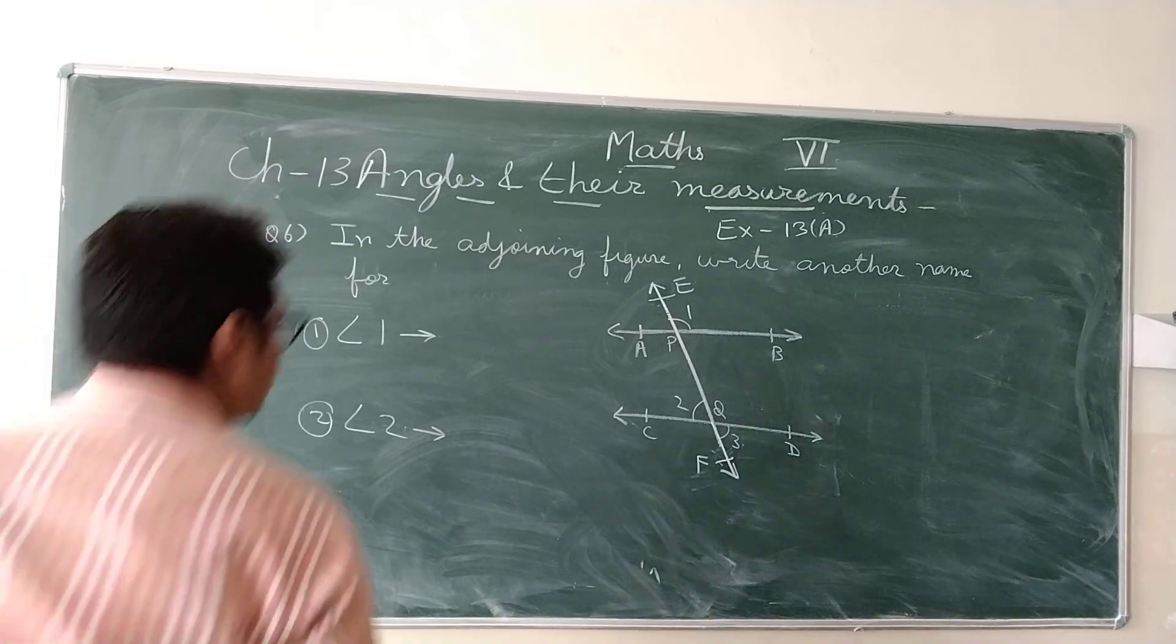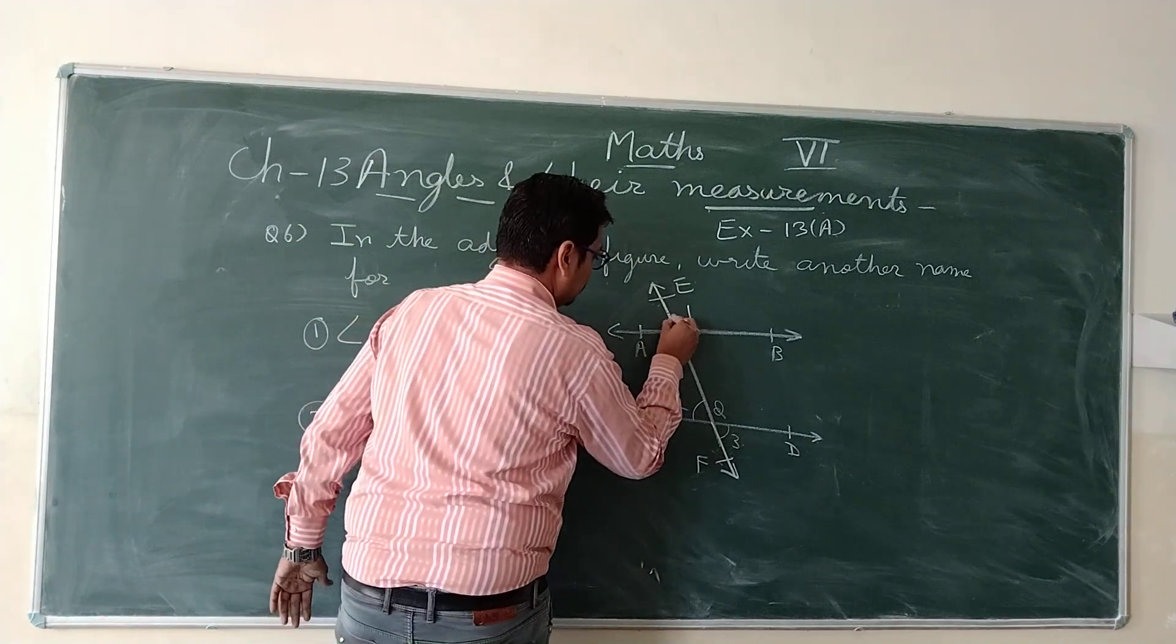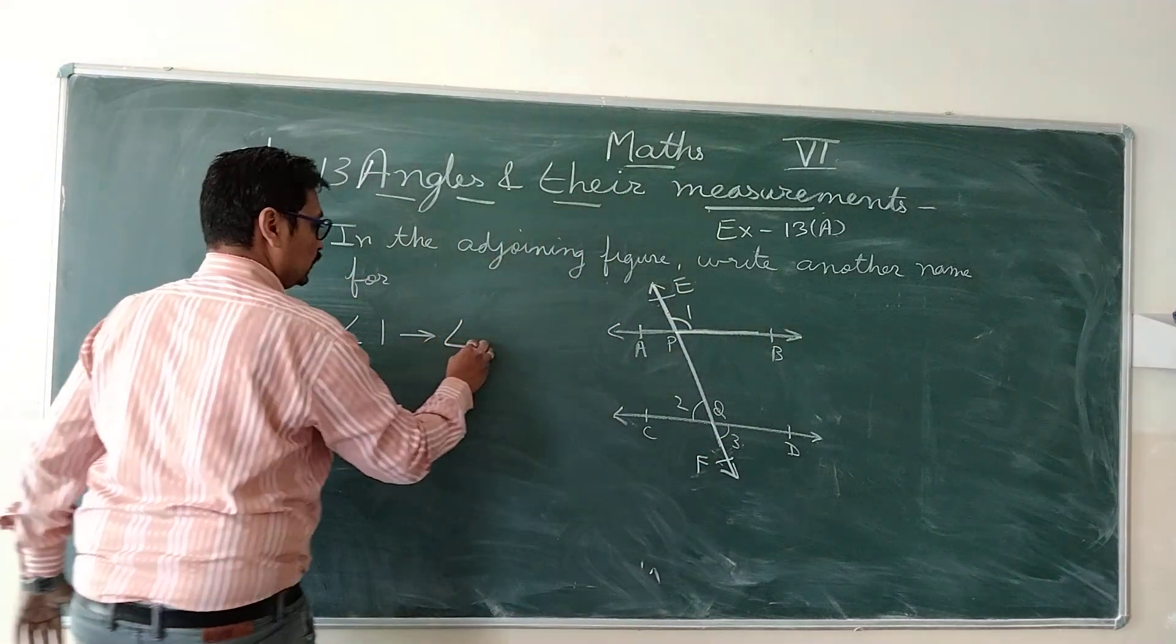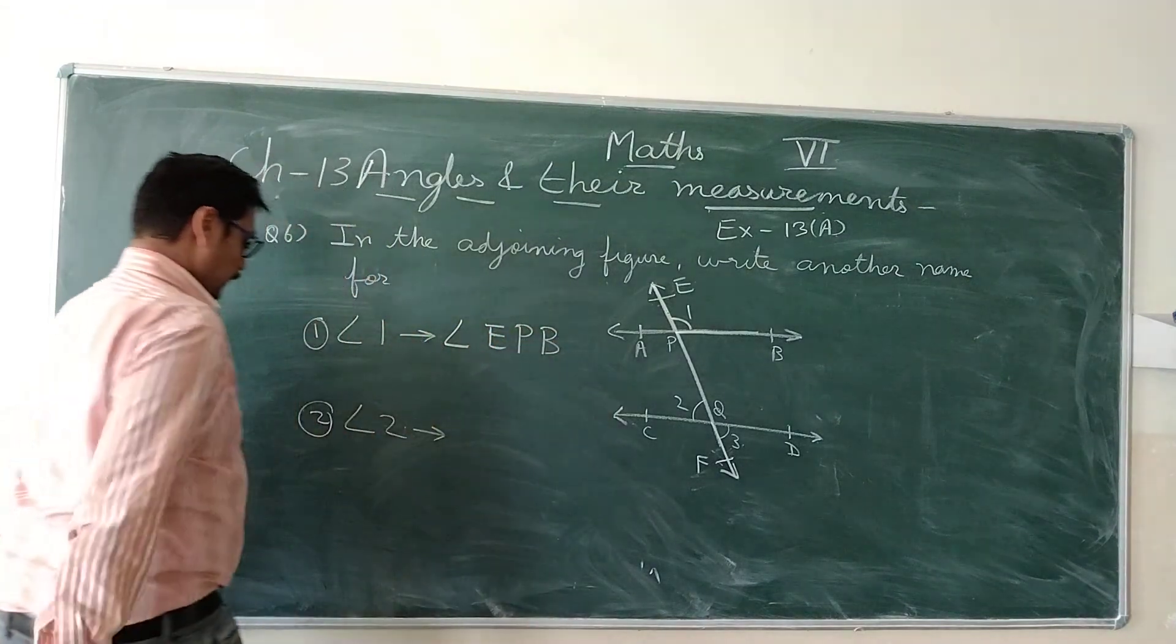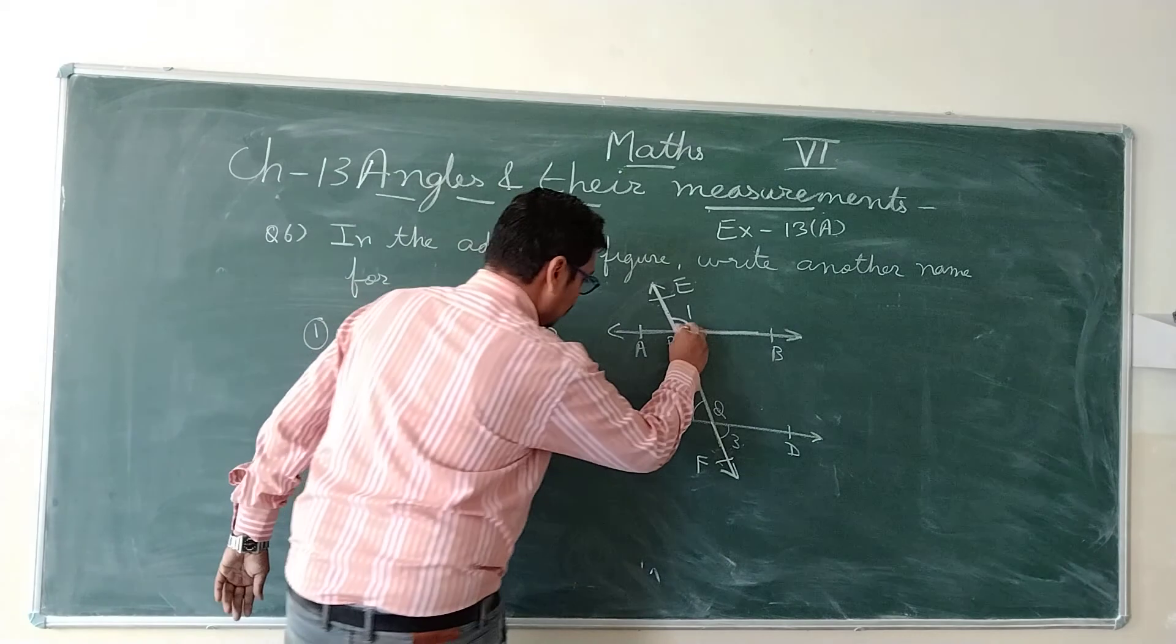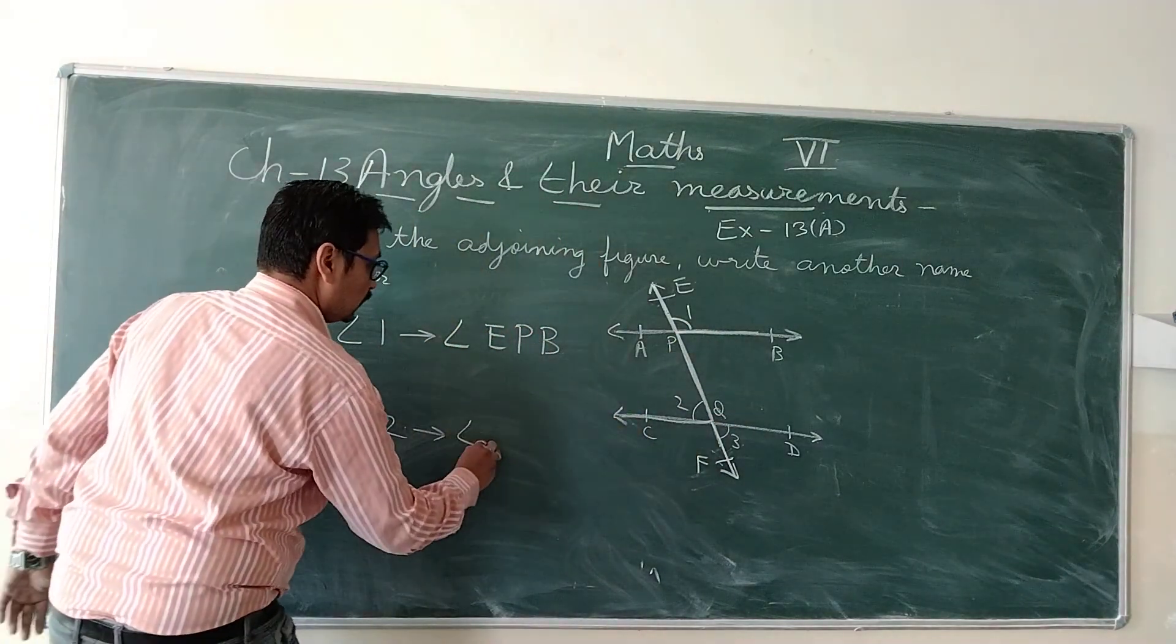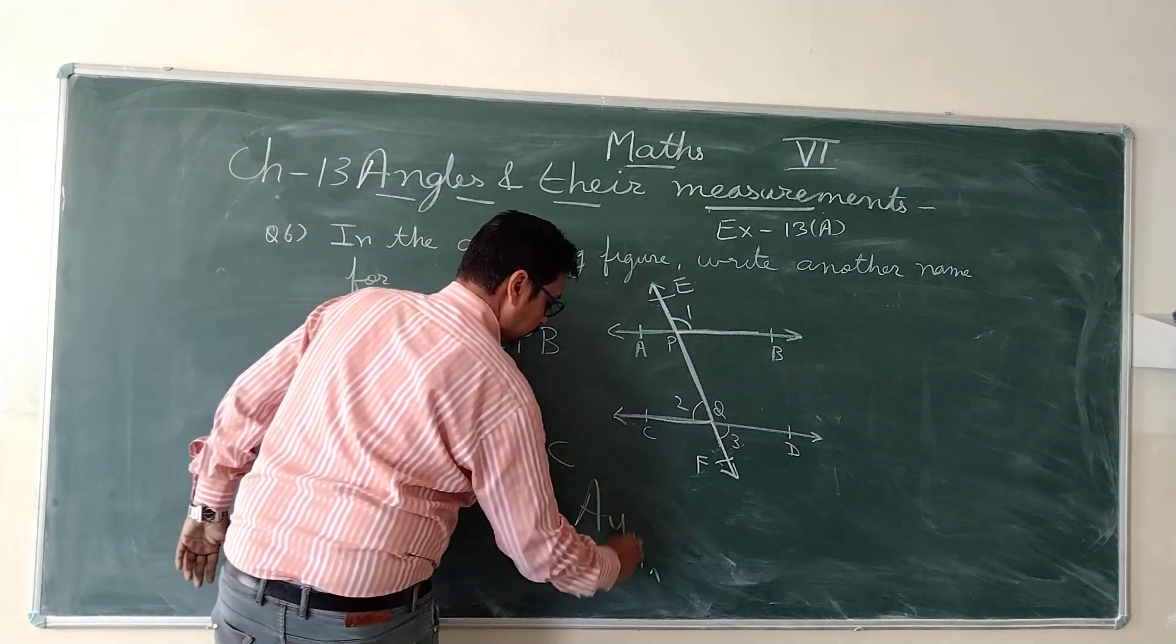In the adjoining figure, write another name for angle 1. This is angle 1. This can be written as angle EPB. And for angle 2. This is angle 2. It can be written as angle PQC. This is the answer.